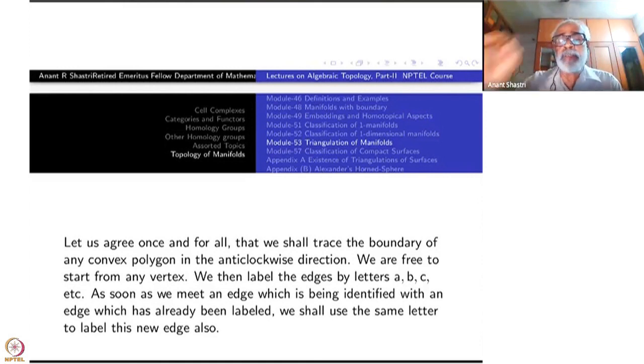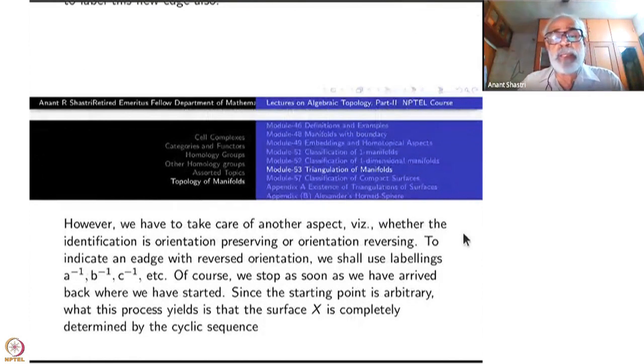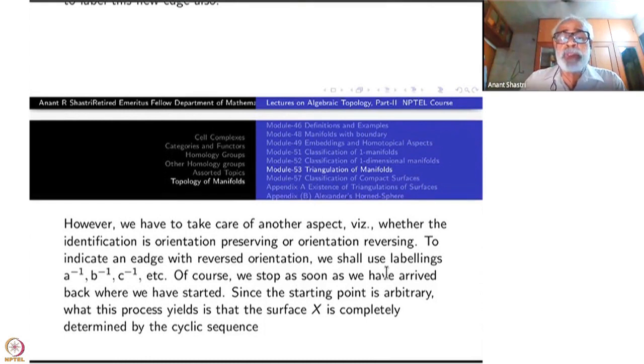As soon as we meet an edge which is being identified with an edge which has already been labeled, we shall use the same letter to label this new edge also. That's first thing. The second thing is we have to take care of another aspect, namely whether the identification is orientation preserving or orientation reversing. To indicate an edge with reversal orientation, we shall use labeling A inverse, B inverse, etc.